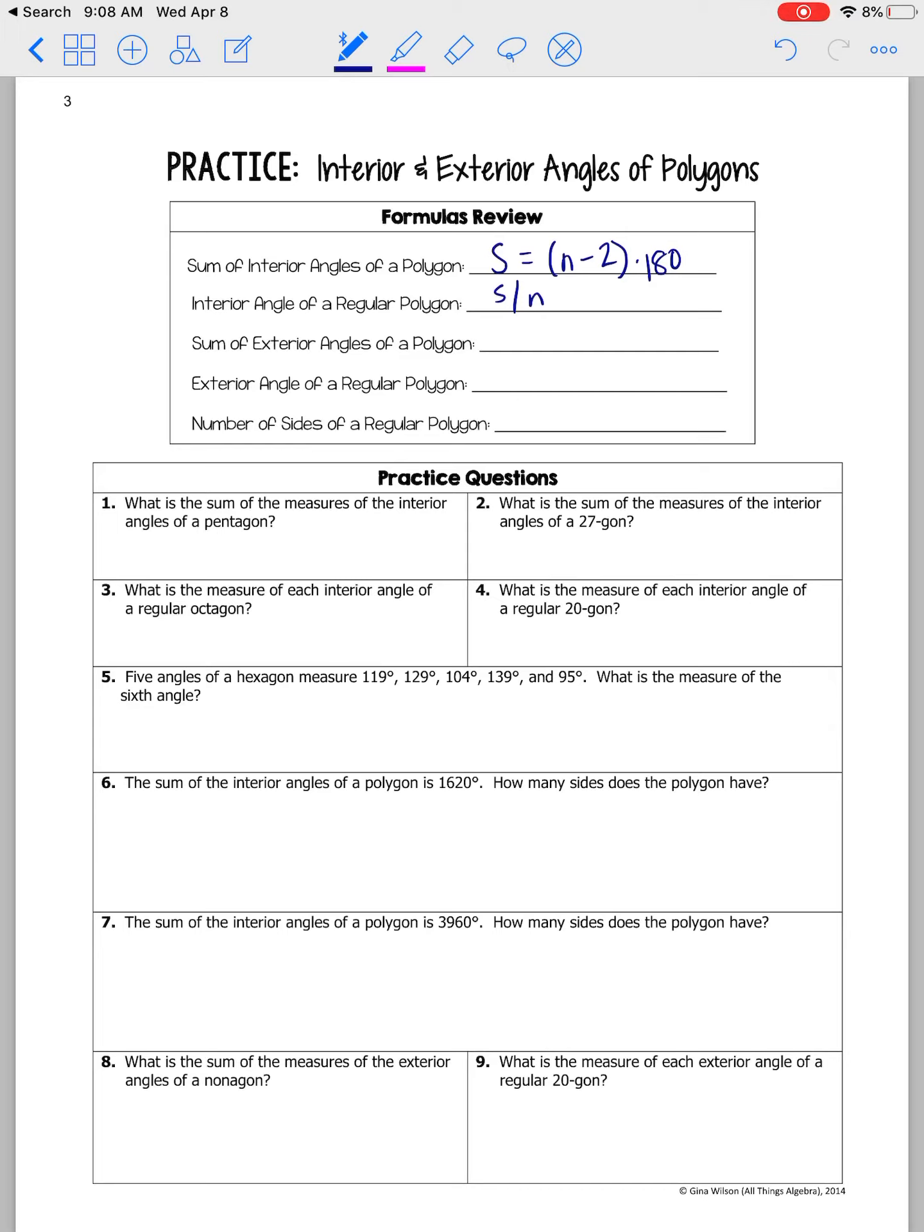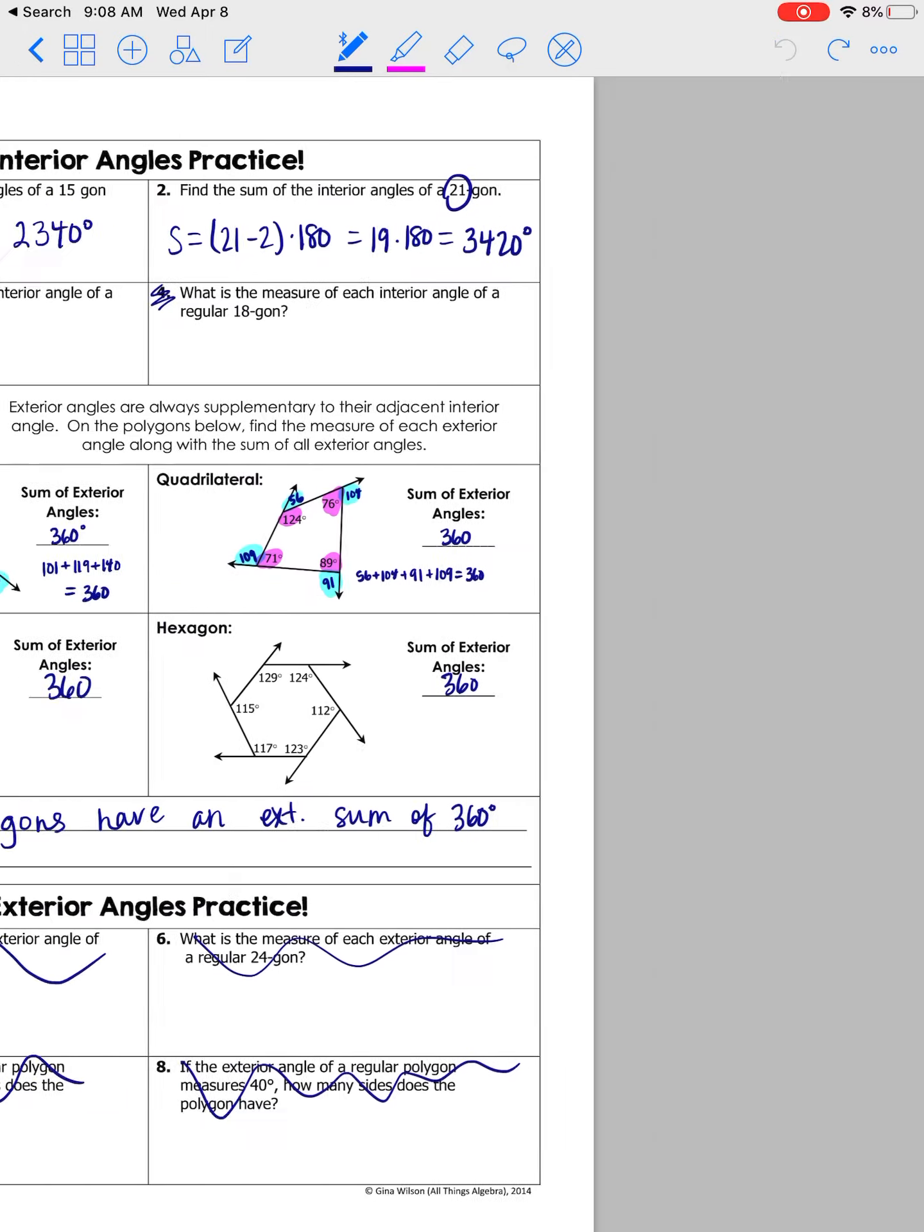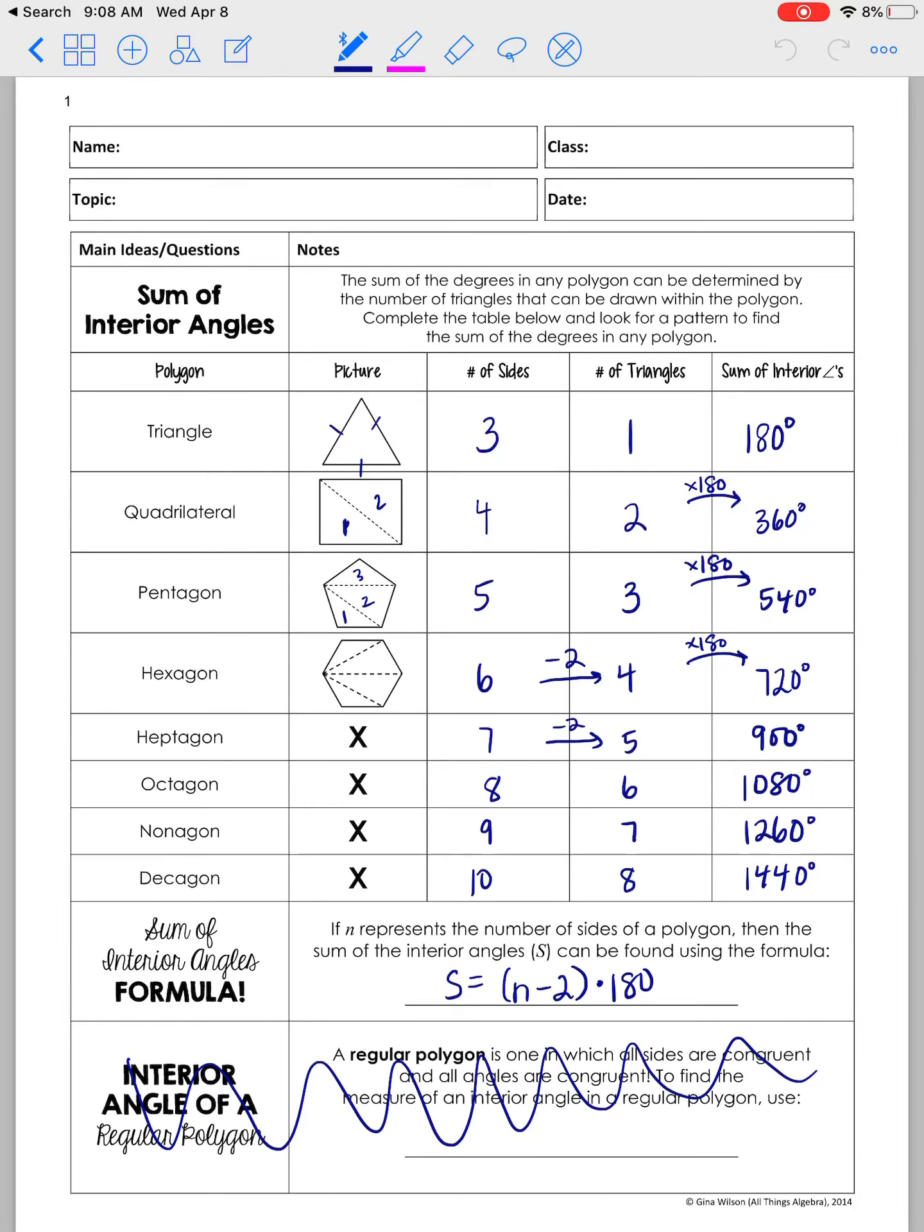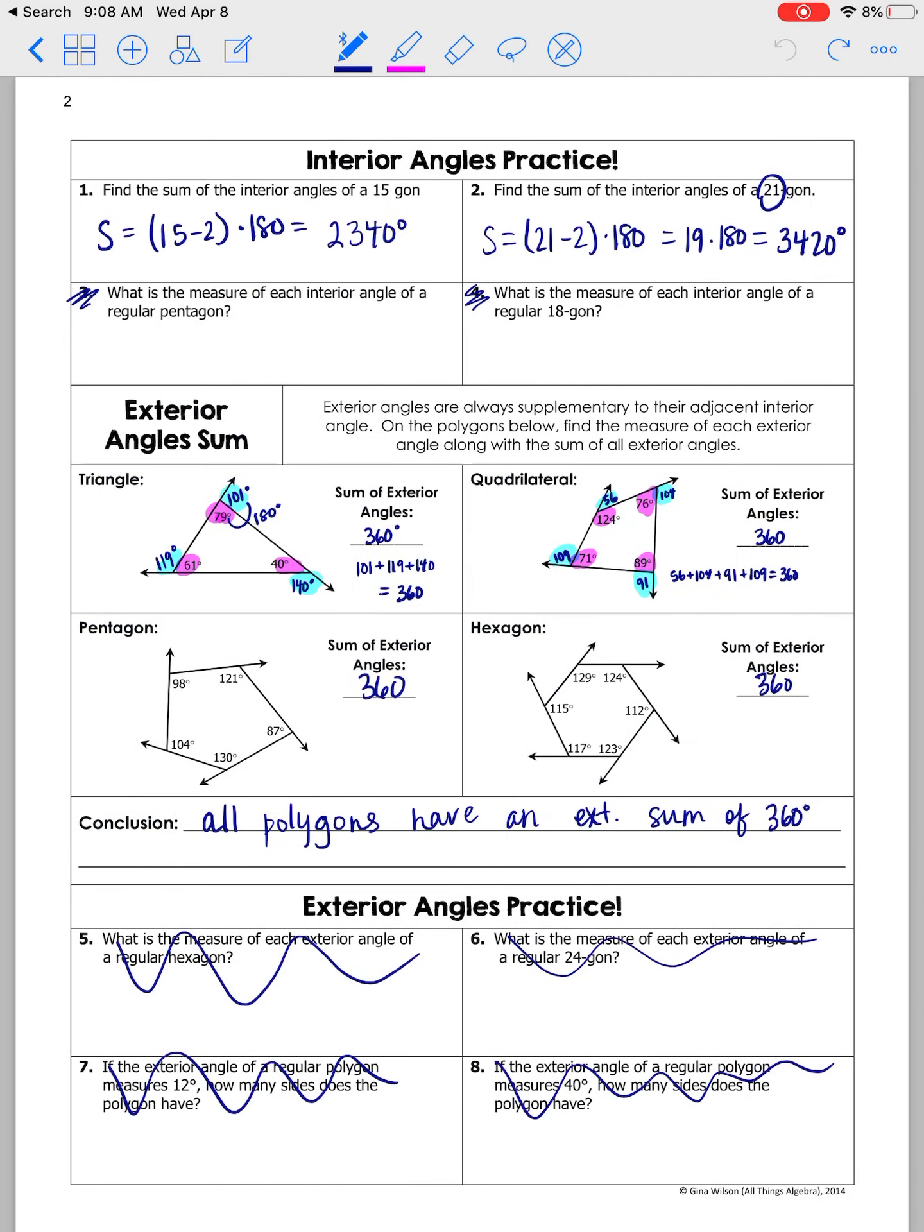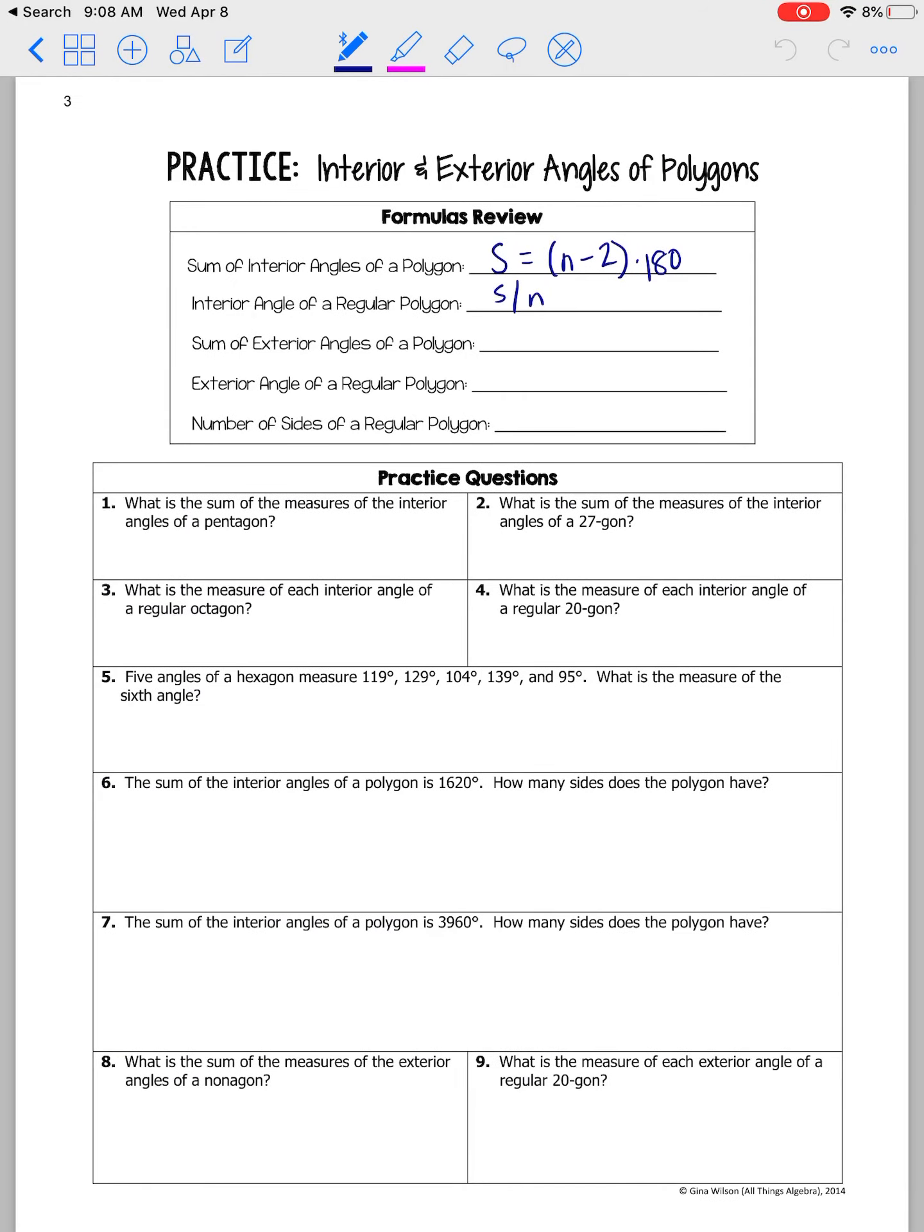So for example, if you have a square, you know how many degrees you have in a quadrilateral. If you don't, look back here. You have 360. And you know that you have four sides, four angles. So it would just be 360 divided by four. And of course, you get 90 because in a square, every angle is 90 degrees. So that's how that would work.